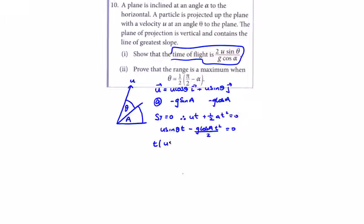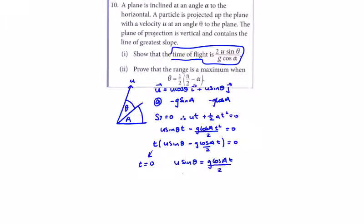Factoring out t, we get u sin theta minus g cos alpha times t over 2. So t equals 0 is the initial solution, and solving for the non-trivial case gives 2u sin theta divided by g cos alpha as the time of flight.